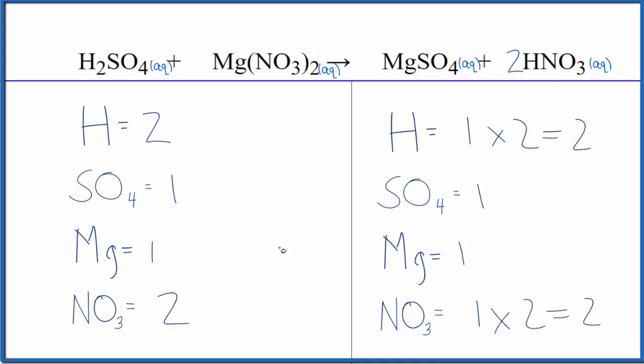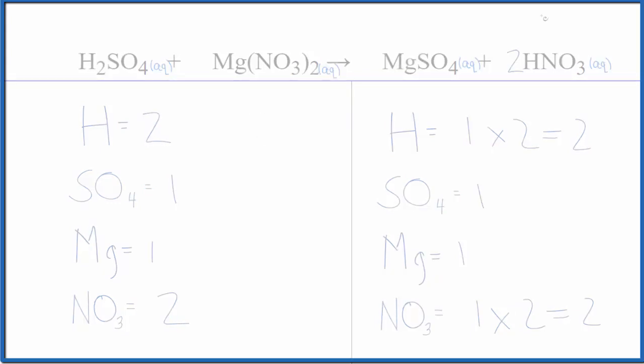We're done. This equation is balanced. You'd get the same answer if you broke these up into individual elements. This is just a lot quicker, and time matters on exams. This is Dr. B with the balanced equation for H2SO4 plus Mg(NO3)2. Do note, though, there's no reaction taking place here. Thanks for watching.